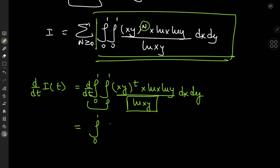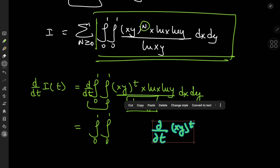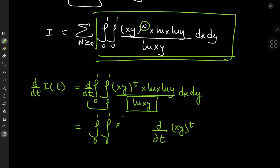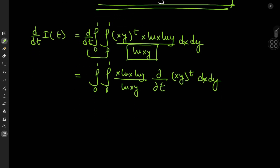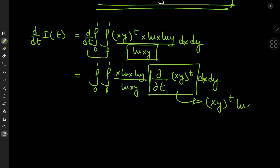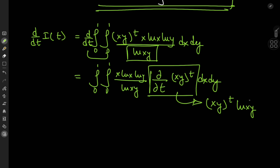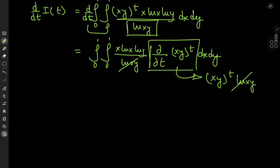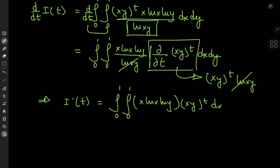Now that we have a plan, we differentiate with respect to the parameter. Switching the order of integration and differentiation, we have the double integral from 0 to 1 of the partial derivative with respect to t of (xy)^t times a bunch of stuff independent of t. Differentiating (xy)^t with respect to t gives (xy)^t times log(xy), and this log(xy) cancels with the log(xy) in the denominator. So the derivative of I with respect to t equals the double integral from 0 to 1 of x times log x log y times (xy)^t, dx dy.